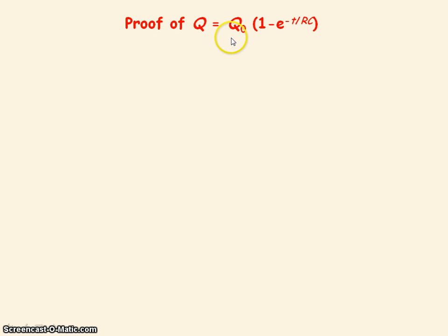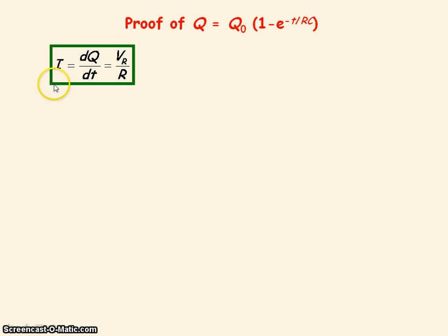Now we're going to go through the proof of this equation for the charge stored on the capacitor while it's charging. It's not a proof you need to know for the exam, so it's only for those who are interested. The current is equal to the rate of flow of charge, which is dq/dt, and we've already seen it's equal to the voltage across the resistor divided by its resistance.